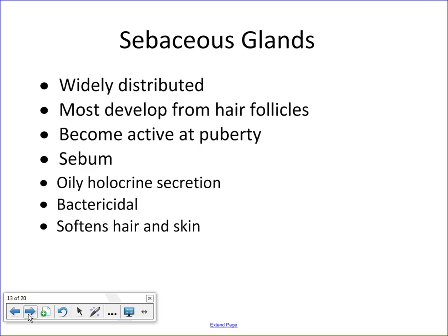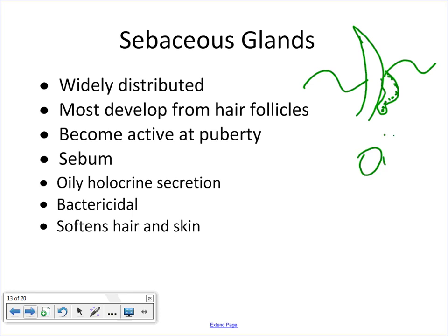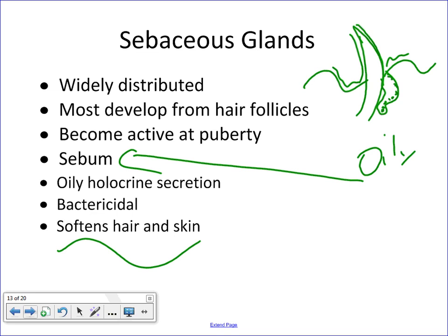Sebaceous glands are another widely distributed type of gland in the body. You should always think to find sebaceous glands by hairs. Like most other exocrine glands in the skin, they're involutions of the epidermis. The cells within these glands produce an oily secretion called sebum. The ducts of these glands open to the hairs and this oily secretion travels onto the hairs and the surface of the skin. Sebum essentially softens and moistens the skin and hair — especially important in dry areas or low-humidity environments to keep skin from drying and cracking.